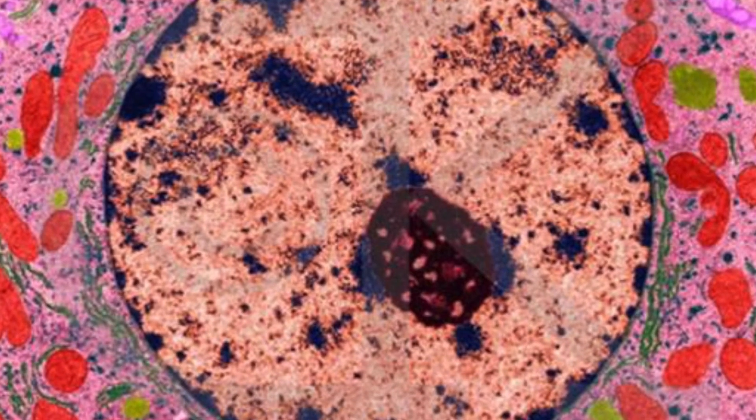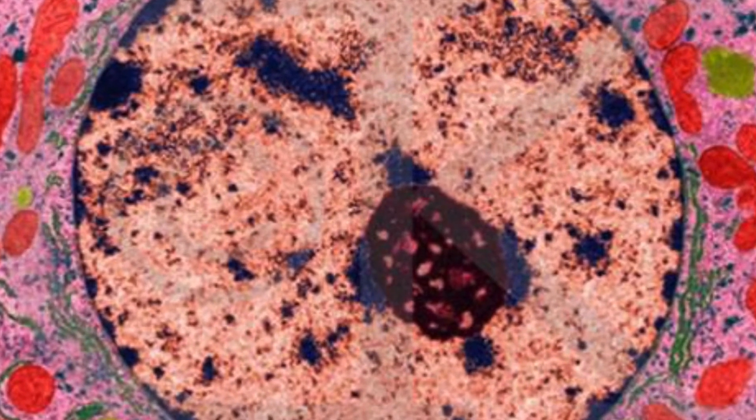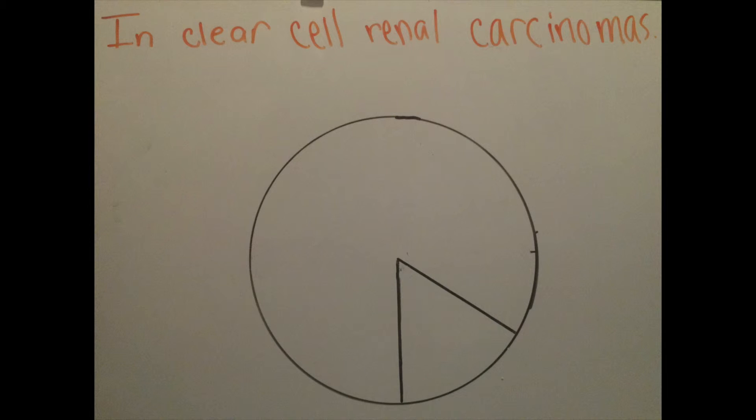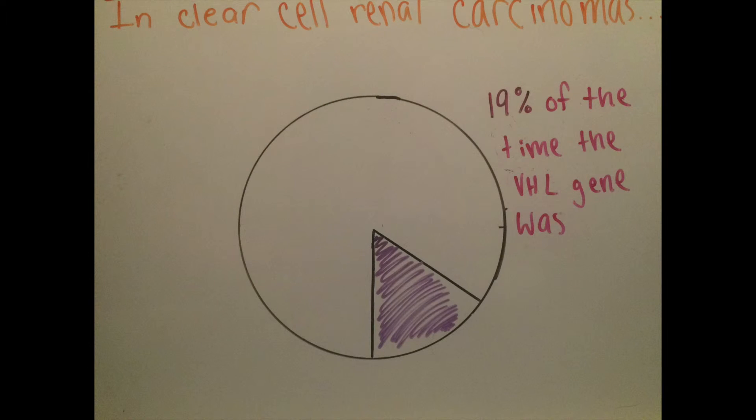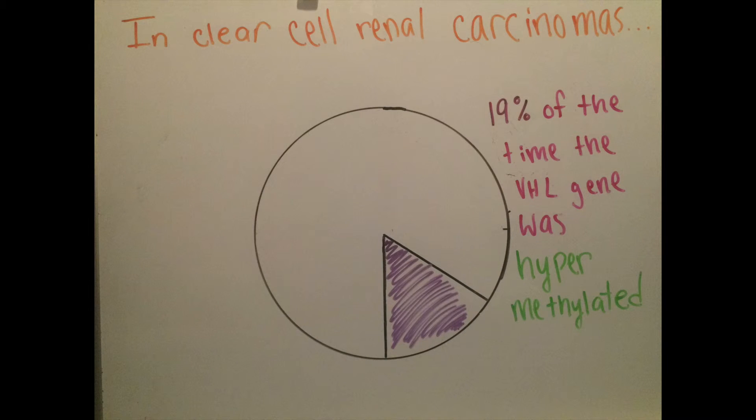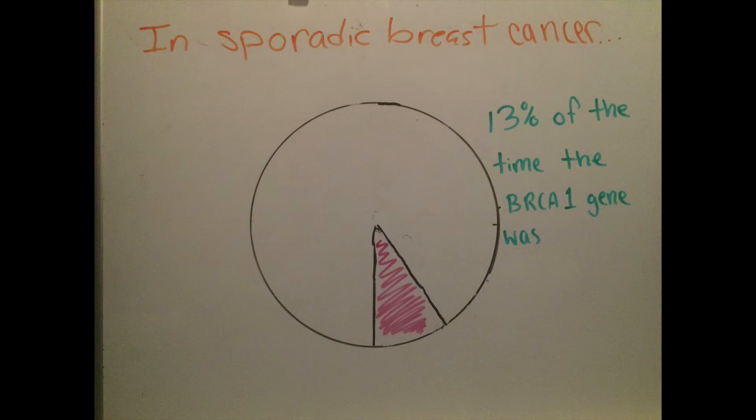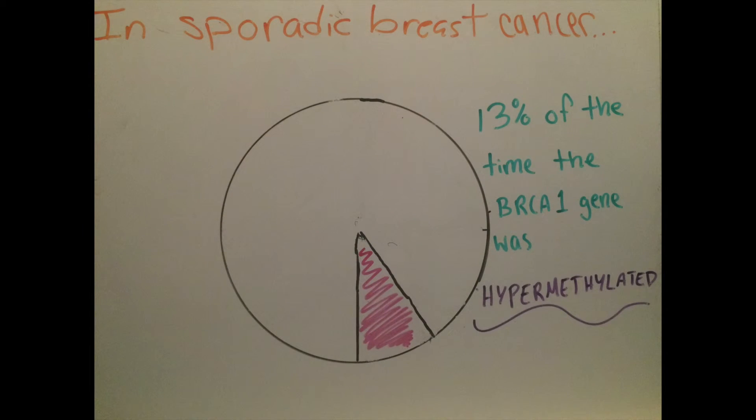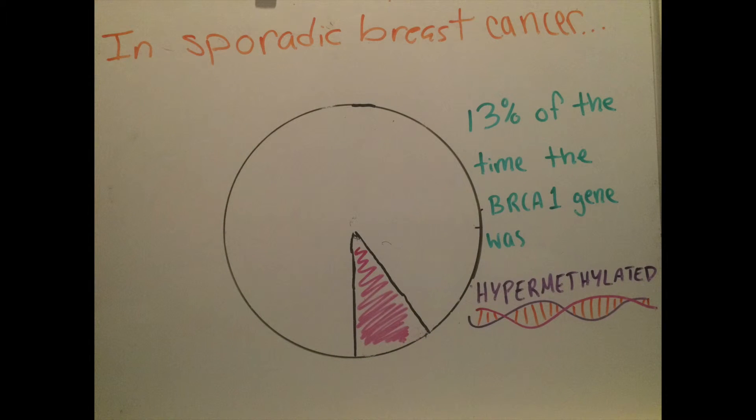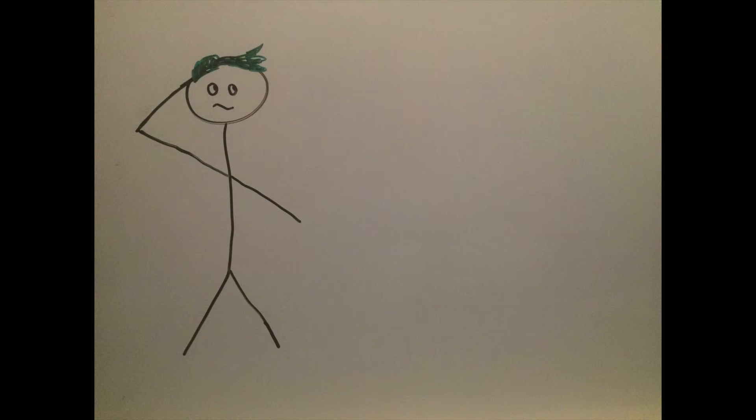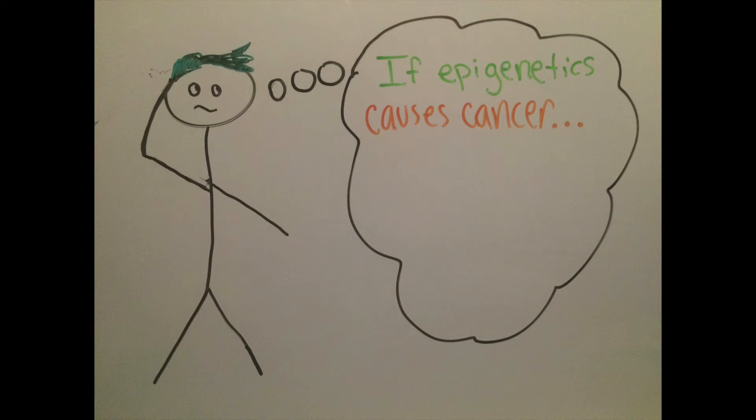A cancer cell will also many times have problems with their tumor suppressor genes. In clear renal cell carcinomas, 19% of the time, the VHL gene, a type of tumor suppressor gene, was hypermethylated, rendering it inactive. In sporadic breast cancer, 13% of the time, the BRCA1 gene, another type of tumor suppressor gene, was hypermethylated, so it was unable to function. Scientists realized epigenetics were responsible for cancer, but since epigenetics are reversible, perhaps they could use epigenetics to treat cancer.